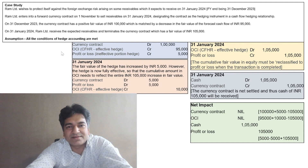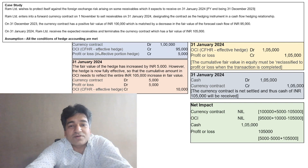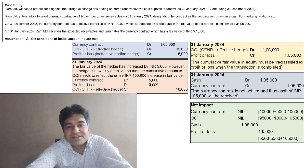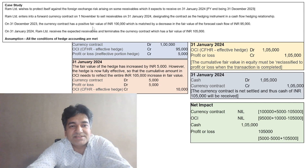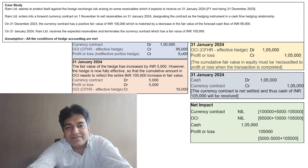Now let's look at the accounting entries. Step one: determine gains and losses on the hedging instrument — the foreign currency contract — which is ₹1,00,000. The currency contract will be debited by ₹1,00,000. Cash flow hedge reserve in OCI will be credited to the extent it is an effective hedge, and the ineffective portion will be credited to profit and loss. Cash flow hedge reserve is the lower of: change in hedging instrument (₹1,00,000) and change in fair value of expected cash flows (₹95,000). So ₹95,000 goes to OCI and the differential ₹5,000 goes to profit and loss.